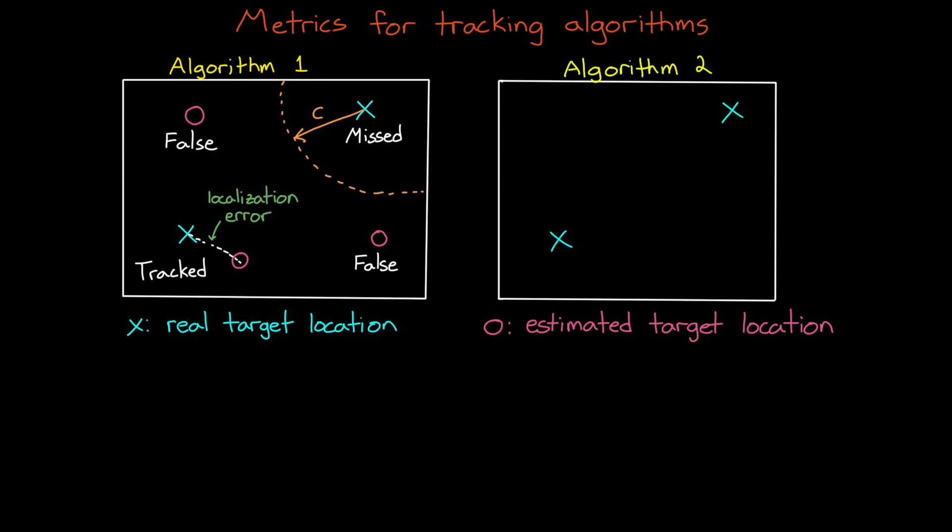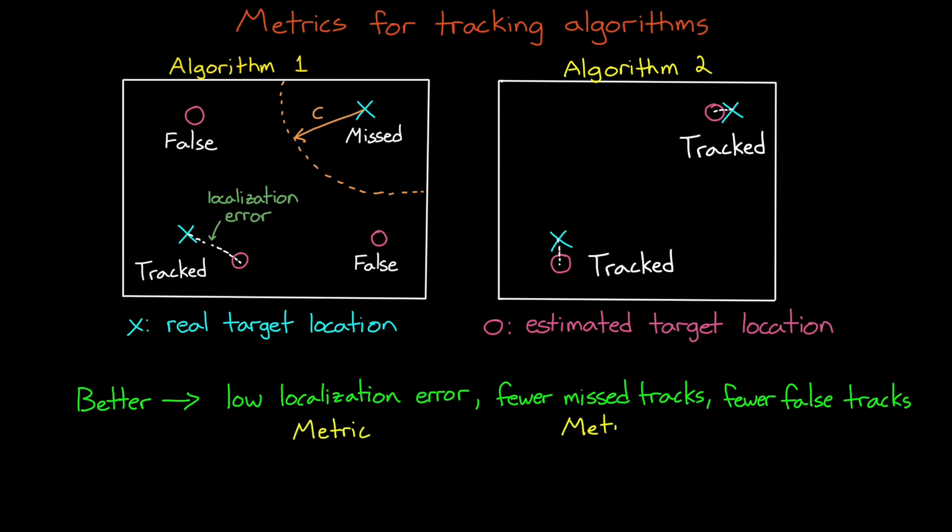In the second example, the true targets are the same, but this time a tracking algorithm returns these two estimated tracks. Here, there are no false or missed tracks and the localization error is smaller for the tracked objects. We can look at these two situations and pretty easily claim that the tracking algorithm on the right is doing a much better job than the one on the left. And a better job here is defined as lower localization error and fewer missed and false tracks. And so we could develop three different metrics, one for localization error, one for missed tracks, and one for false tracks.